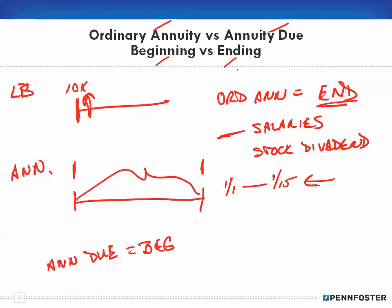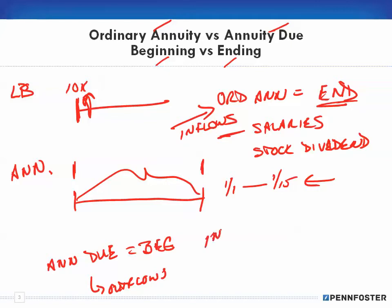An annuity due, on the other hand, occurs at the beginning of a period. Whereas ordinary annuities tend to be inflows of cash, annuity dues have a tendency to be outflows — things that you have to pay, like insurance premiums or rent.